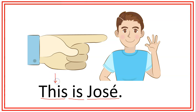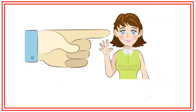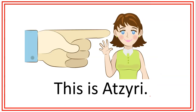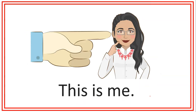Importante: cuando utilizamos this para presentar a alguien, no utilizamos el artículo a, porque si no diríamos este es un José, y eso no está bien dicho. Por lo tanto, nunca, cuando presentemos a una persona, vamos a utilizar la palabra a or an. Vamos a ver algunos otros ejemplos. This is a city. This is me — podemos utilizar este ejemplo cuando estamos mostrando alguna foto.